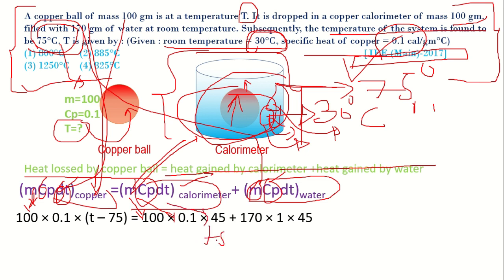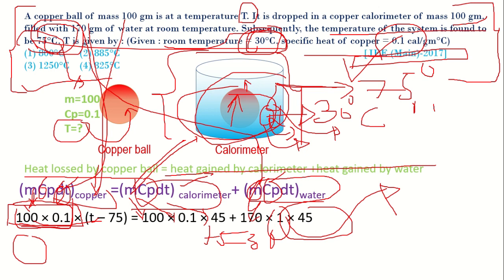Then mass of water is 170 and Cp is 1. This is not given in question, we have to remember the specific heat of water, and temperature difference is 45. If you solve this one, 100 into 0.1 will become 10.